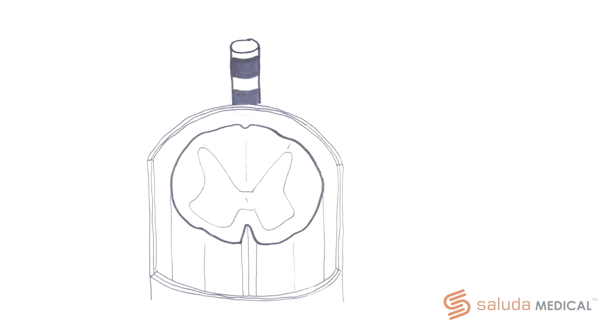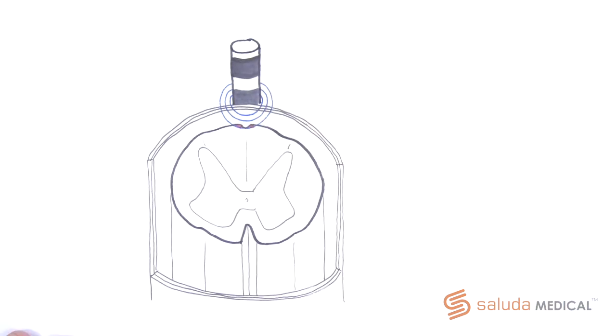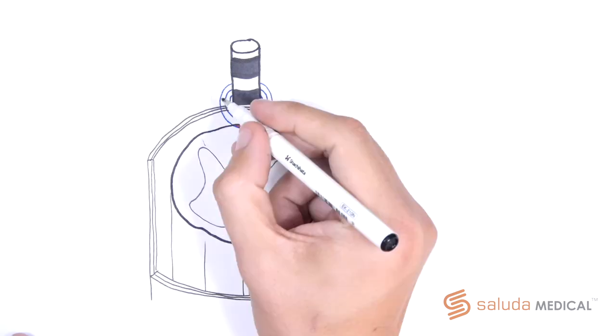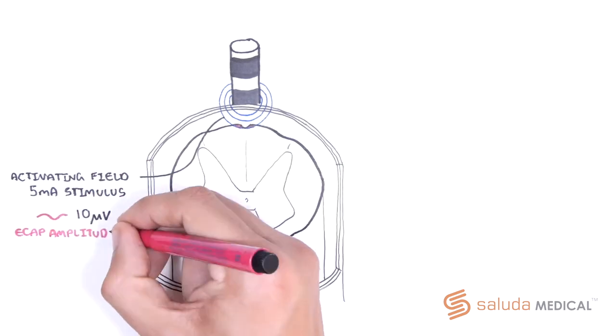If we look at the spinal cord in cross section, with a spinal cord stimulation electrode in the epidural space, we can imagine the activating electric field that is generated by the implanted stimulator around a specific spinal cord stimulation contact. If strong enough, it will penetrate the dura mater, cerebrospinal fluid, and activate a particular volume of fibers in the dorsal columns. These activated fibers will in turn elicit an ECAP the system is able to record from another contact on the same epidural lead. In this example, a 5 mA stimulus has generated a 10 µV ECAP.